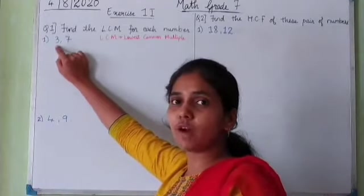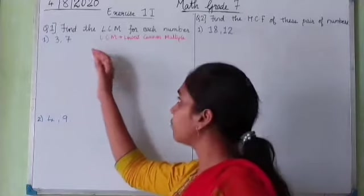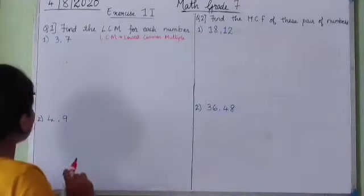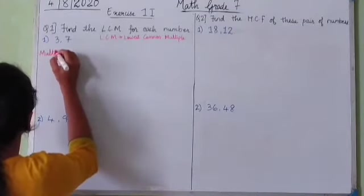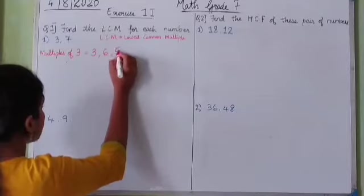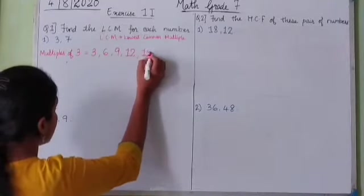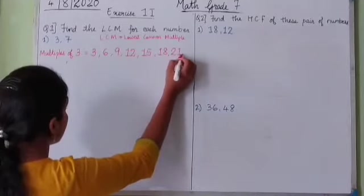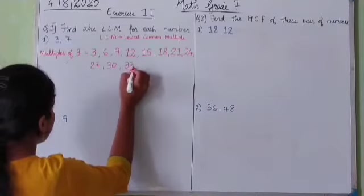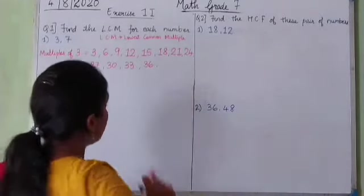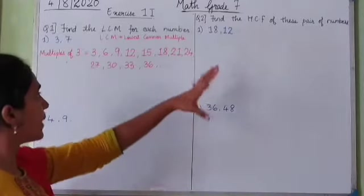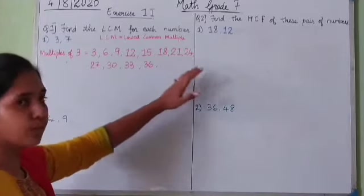Multiples of 3: 3, 6, 9, 12, 15, 18, 21, 24, 27, 30, 33, 36 — and so on. This continues to infinity because numbers are infinite, and we can keep multiplying 3 by further numbers like 13, 14, 15.